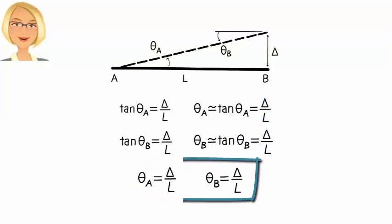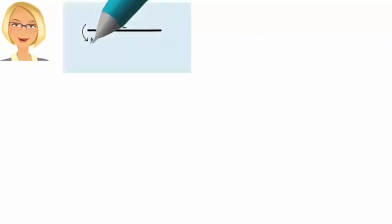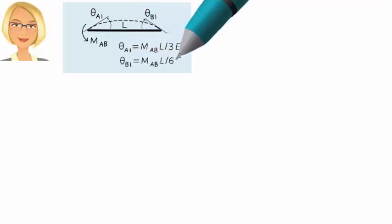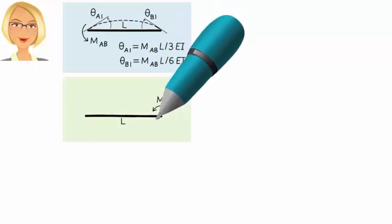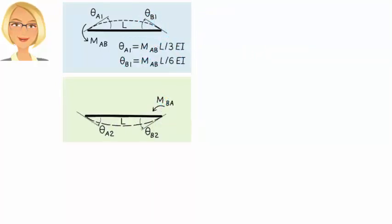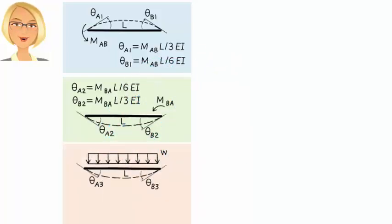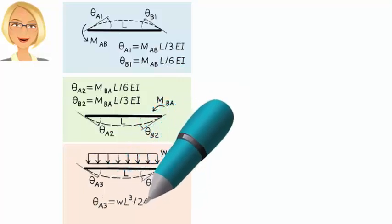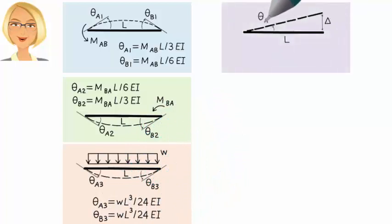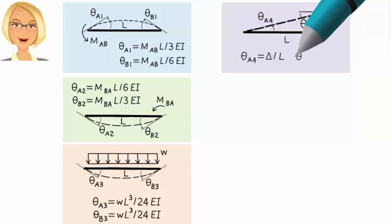Let's begin by recalling a few diagrams and equations from lecture SA28. This diagram shows member end rotations due to a counterclockwise moment placed at A. The equations that go with a diagram are shown. Similarly, this diagram shows member end rotations when a moment is placed at B. And here are the corresponding equations. Further, from lecture SA29, recall this diagram. It shows member end rotations due to a uniformly distributed load. And here are the corresponding equations. Now, let's add this diagram to the list. The diagram shows member end rotations due to a differential displacement denoted by delta, where theta A4 equals theta B4 equals delta over L.